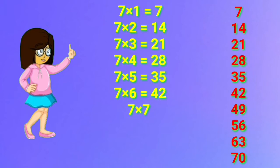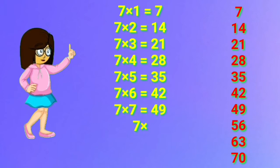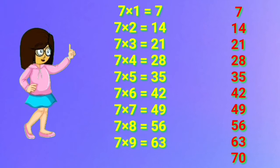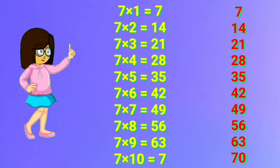7 seven's are 49. 7 eight's are 56. 7 nine's are 63. 7 ten's are 70.